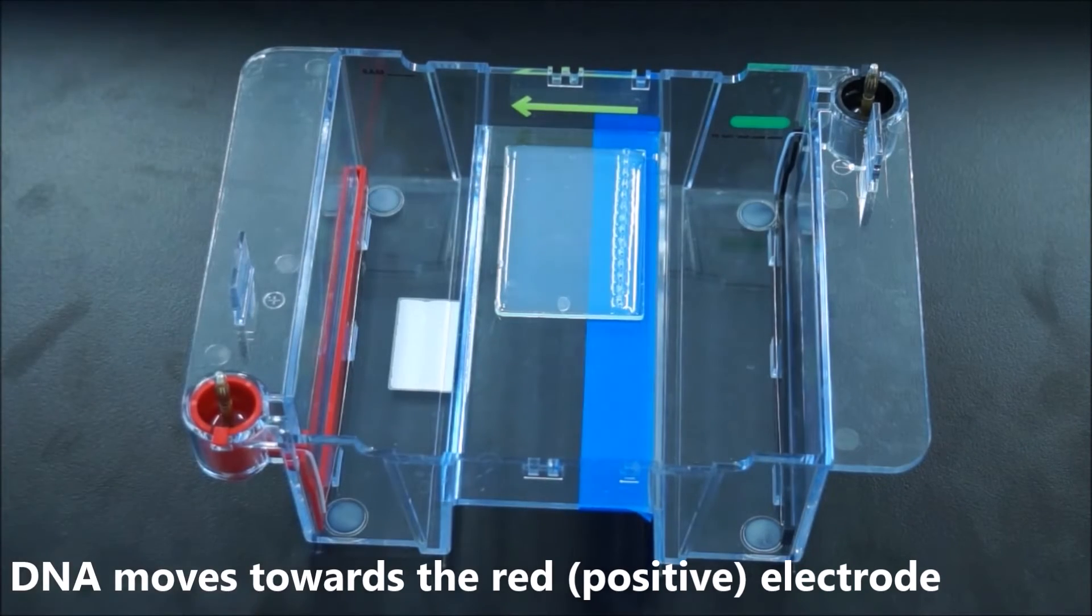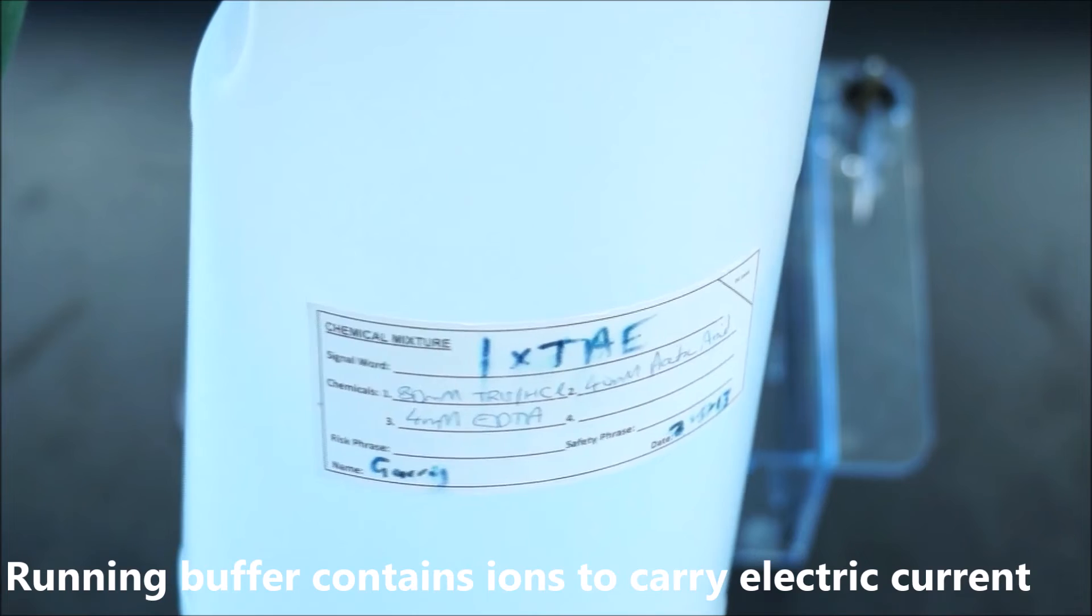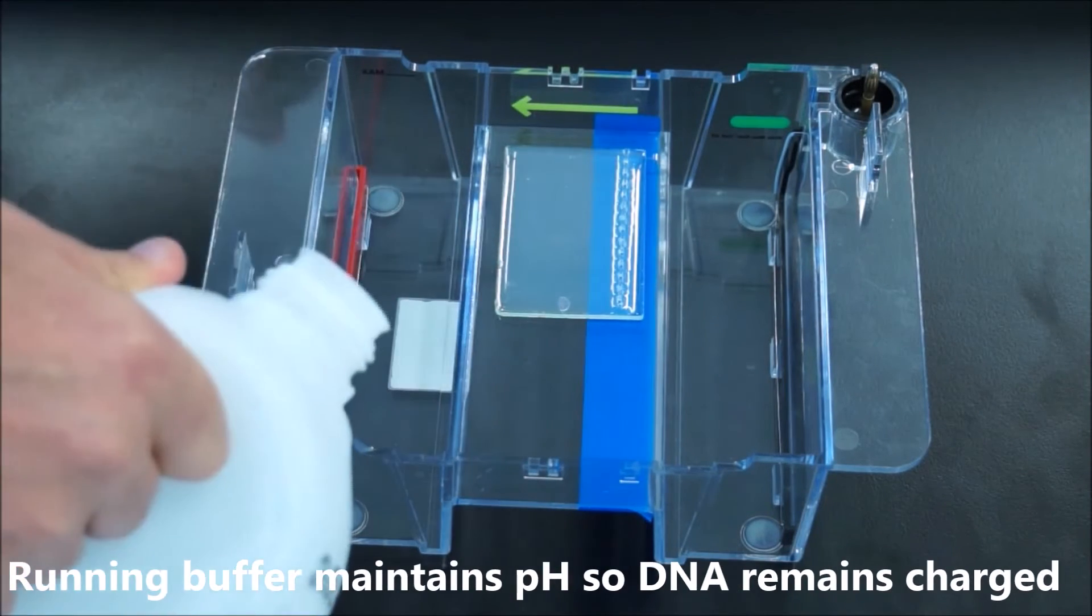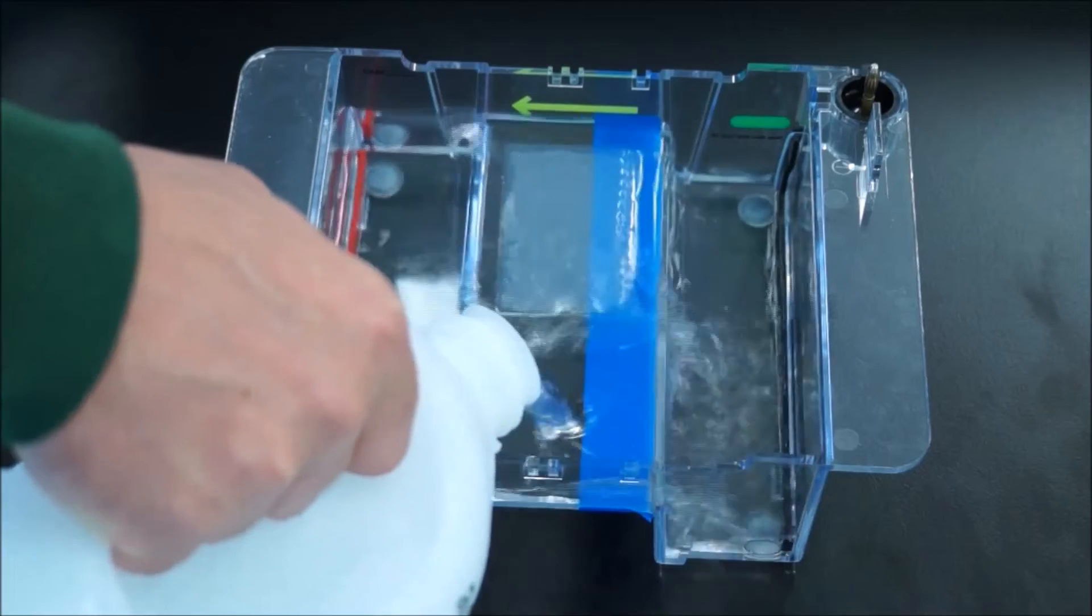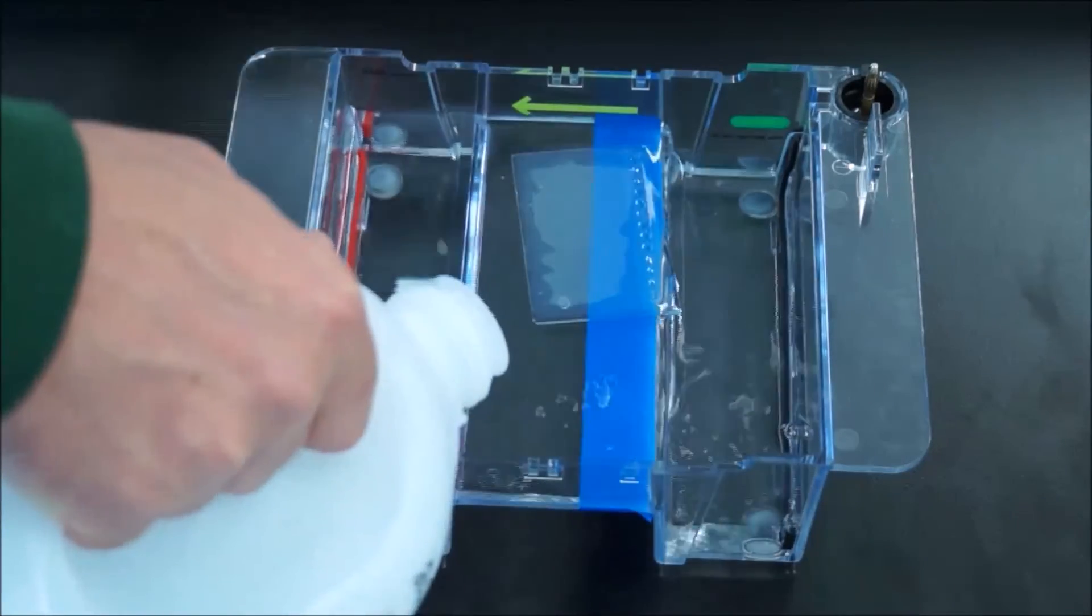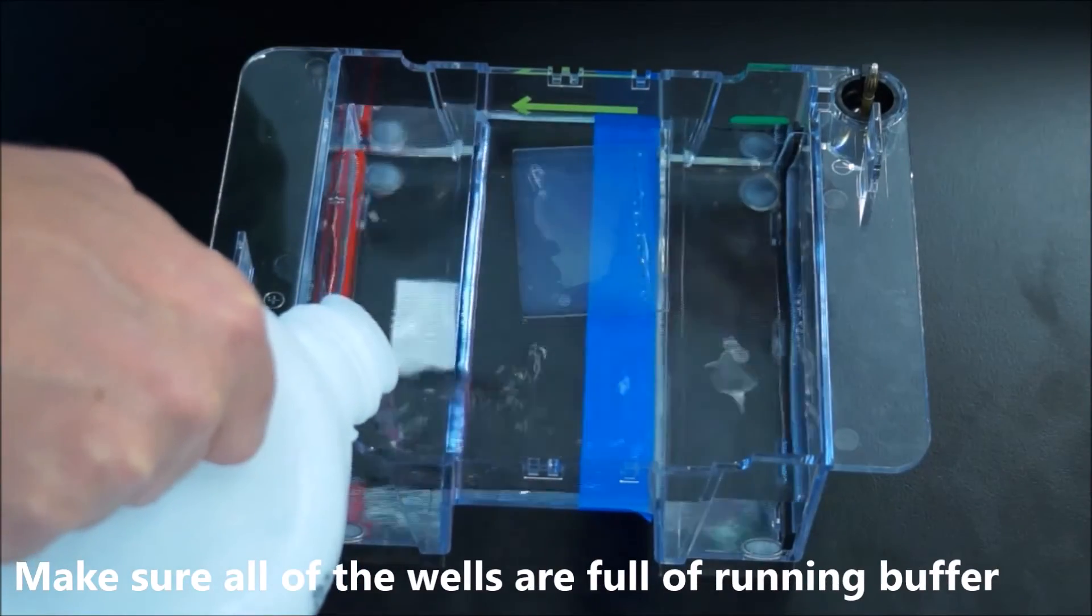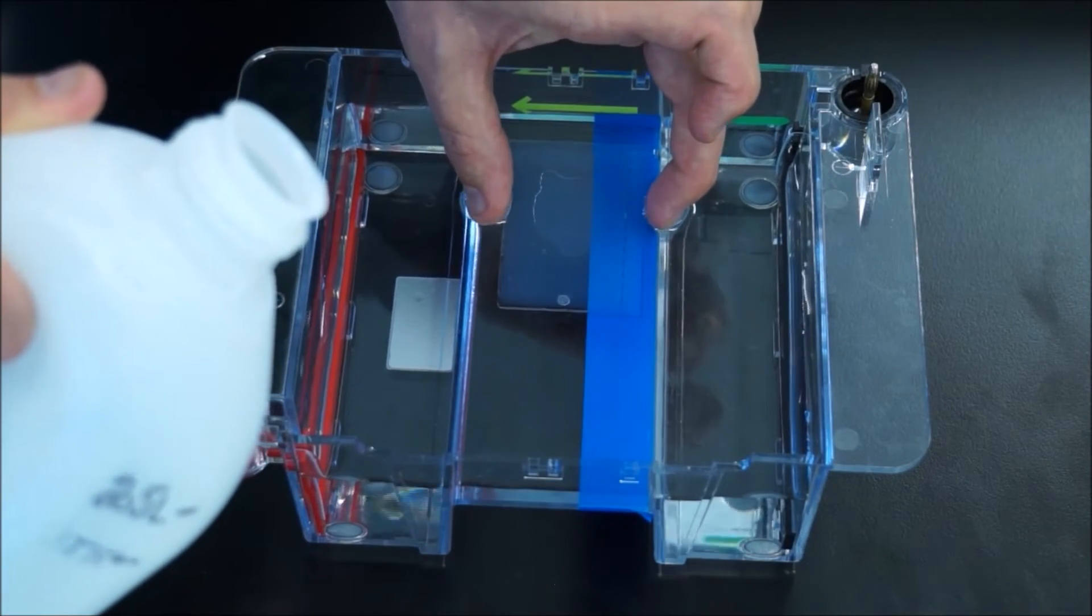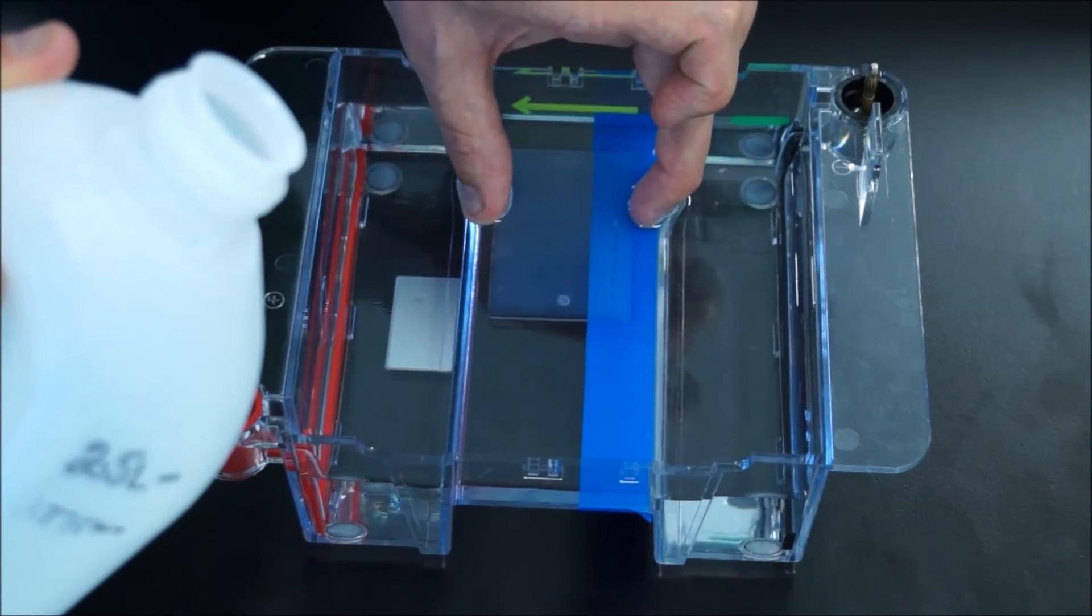Next you should find some TAE. This is also known as running buffer and it's full of ions so the electric current can pass, and it's the right pH. Just pour that in. You want just enough so it just covers over the top of the gel. Once all the wells are filled in, that's fine. You might find that your gel moves around a little bit - that's alright, you can reposition it at any stage.